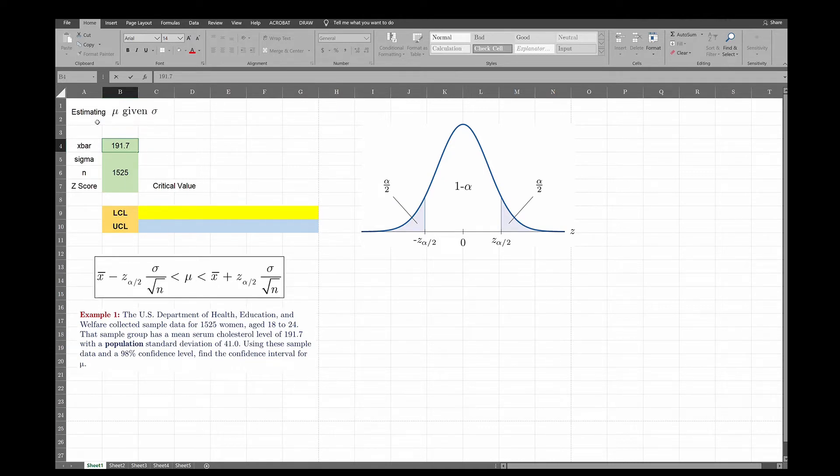That's why we call this estimating the mean given sigma. So the sample mean is 191.7. Your standard deviation is the population standard deviation so it's sigma not s. So sigma is given, it's 41. So I have my x bar, I have my sigma, I have my sample size. Now the only thing I need to figure out is the critical value, the z value that I need to use here.